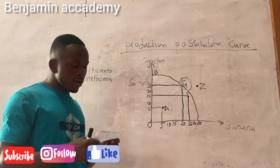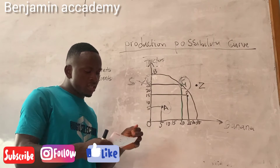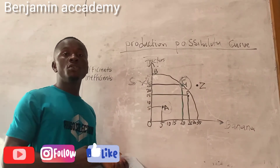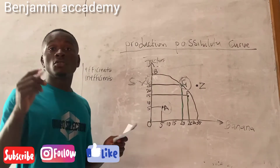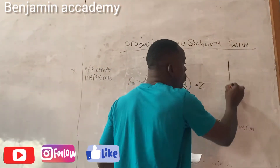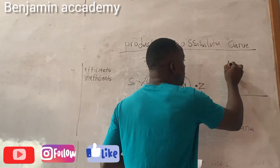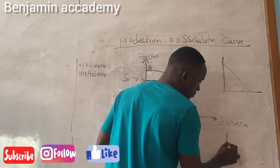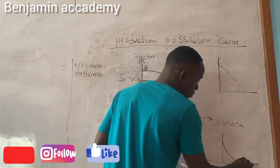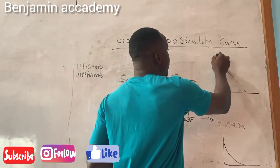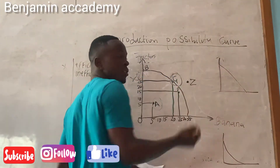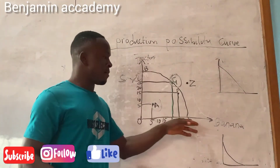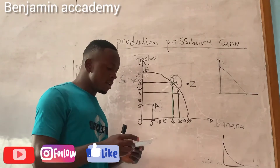The next question says: identify the shape associated with the two other types of PPC. The two other types of PPC we know are the straight line PPC and the concave PPC. The country is producing two goods: tractors and bananas.